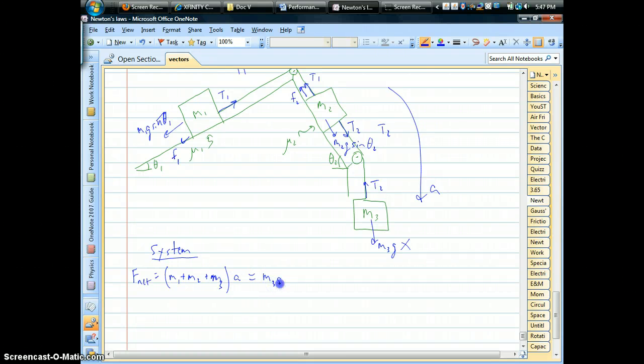So, we've got M3g minus T2. Okay. Then we go to the next block. Now here, this is what I mean by internal forces. I would call this tension two an internal force. Because in one direction, it's trying to slow you down, but on the next block, it's trying to speed you up. By doing the whole system, it drops out. That's why we do this as a first step. But we also have that downhill gravity is a positive force. The friction and tension one are opposite the motion, so those are negatives.